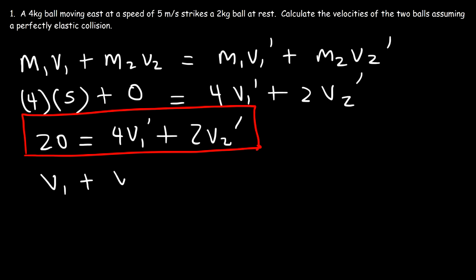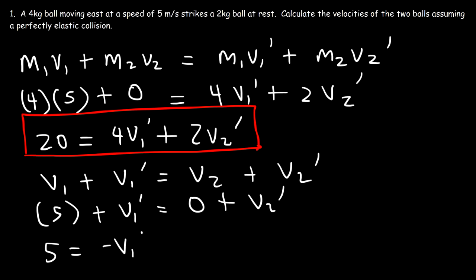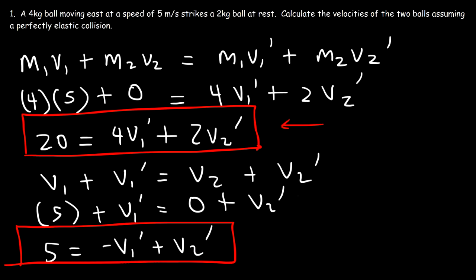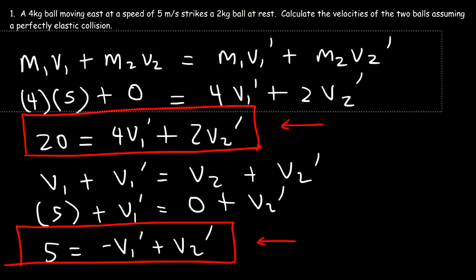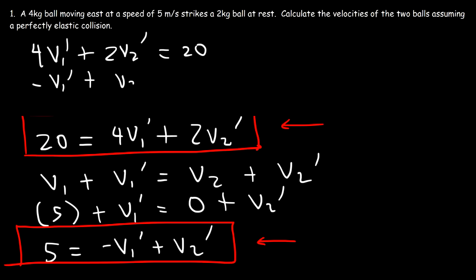Now let's focus on the second equation: v1 + v1' = v2 + v2'. v1 is 5, v1' is unknown, v2 is 0, and v2' is unknown. Moving v1' to the other side gives us: 5 = -v1' + v2'. So we now have two equations. The first: 4v1' + 2v2' = 20. The second: -v1' + v2' = 5.